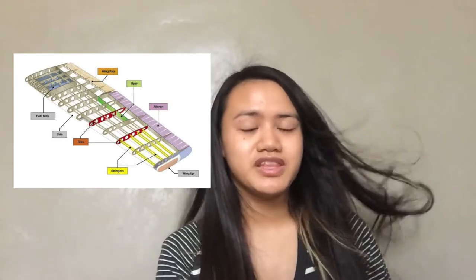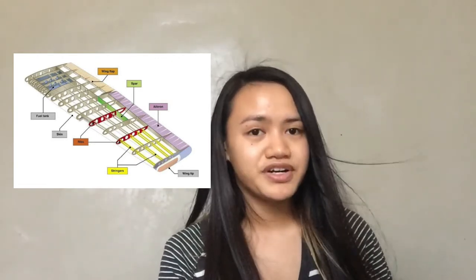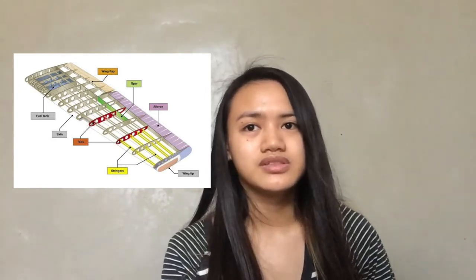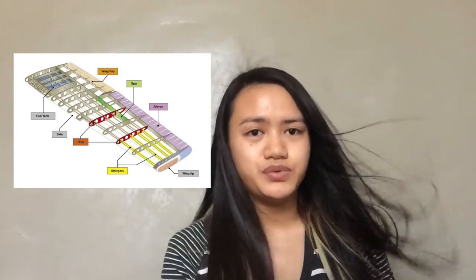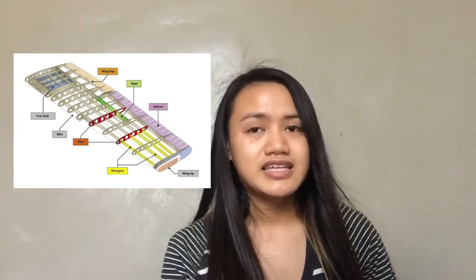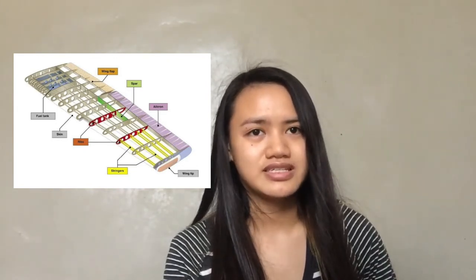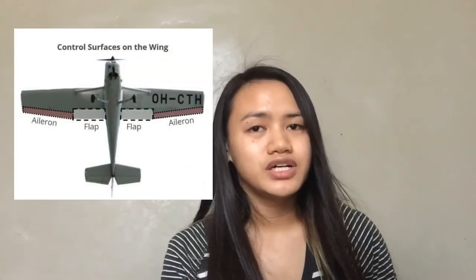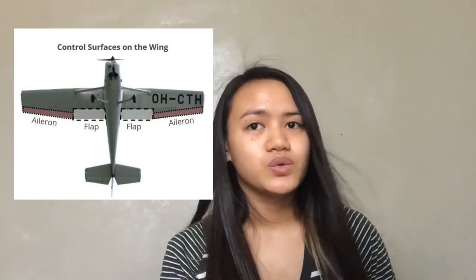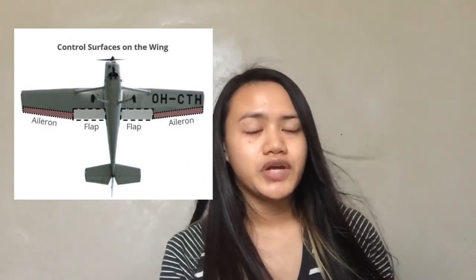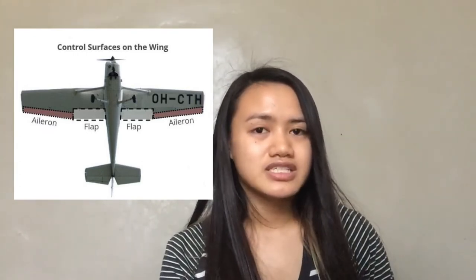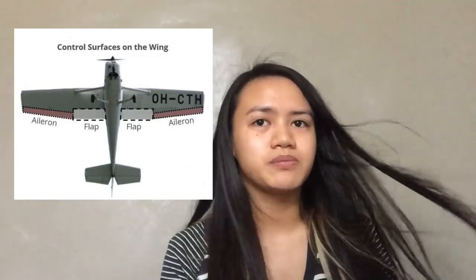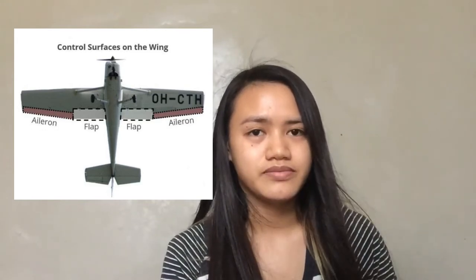The principal structural parts of the wing are spars, ribs, and stringers. Ribs determine the shape and thickness of the wing. Spars carry flight loads and the weight of the wing while on the ground. Stringers run spanwise and attach between the ribs; their purpose is to serve as a structural component that transfers loads. Attached to the rear or trailing edges of the wings are two types of control surfaces: ailerons and flaps. Ailerons extend from about the midpoint of each wing outward toward the tip and move in opposite directions to create aerodynamic forces that cause the airplane to roll. Flaps extend outward from the fuselage to near the midpoint of each wing. When extended, the flaps move simultaneously downward to increase the lifting force of the wing for takeoffs and landings.